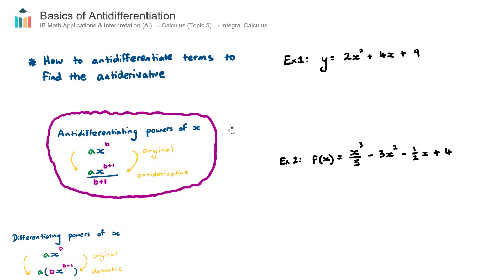So I have a diagram here, and I also have the diagram from the differentiating powers of x. I want you to sort of draw the parallel, and it's kind of the opposite. If you're doing integral calculus, you've probably done differential calculus, and when you differentiated, you took one off the power and you brought the power down. When we antidifferentiate powers of x, we add one to the power and we divide by that new power.